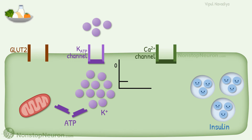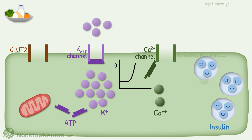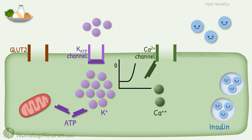As potassium ions are positively charged, the voltage approaches electropositivity. This depolarization causes opening of voltage-sensitive calcium channels, which allows calcium influx. Increased intracellular calcium finally triggers exocytosis of insulin-containing vesicles, and this results in the release of insulin into the blood. So, this is how glucose causes insulin release.